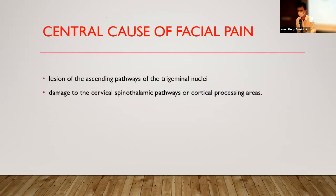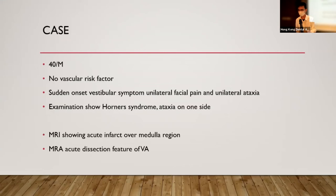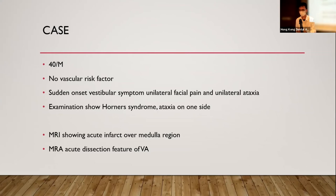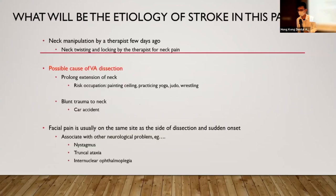For central causes of facial pain, any lesion along the ascending pathway of the trigeminothalamic tract, or damage to the cervical spinothalamic pathways or cortical processing areas, can cause facial pain. One case is a 40-year-old gentleman with no vascular risk factors who suddenly developed vestibular symptoms with unilateral facial pain and unilateral ataxia. Examination showed Horner's syndrome and ataxia on one side, and MRI brain showed an acute infarct over the medulla. He had no vascular risk factors, yet angiography showed typical features of acute vertebral artery dissection.